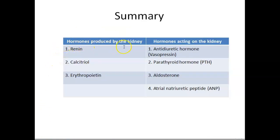In summary, we have discussed the hormones produced by the kidney and the hormones acting on the kidney. The major hormones produced by the kidney are: renin, which is important in regulation of blood pressure and is secreted by the granular cells of the juxtaglomerular apparatus; calcitriol, which is important in absorption of calcium as well as phosphate from the GIT; and erythropoietin, which is important in formation of red blood cells.